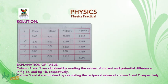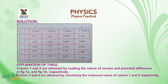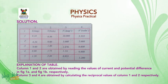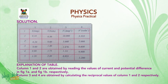Solution — look through the table. There are four columns: one for current, one for voltage, one for current inverse (1/I), and one for voltage inverse (1/V). Columns 1 and 2 are obtained by reading the values of current and potential difference from figures 1a and 1b respectively. Columns 3 and 4 are obtained by calculating the reciprocal values of columns 1 and 2 respectively.